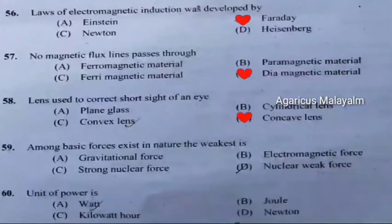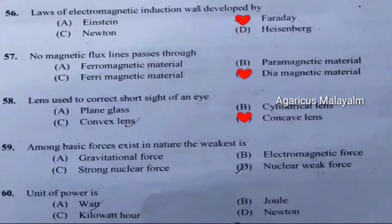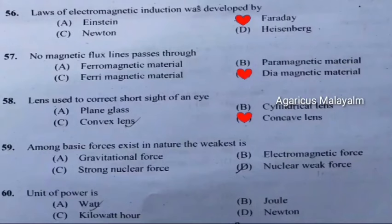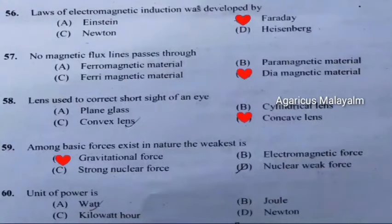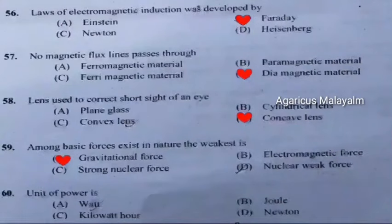Question 59: Among basic forces existing in nature, the weakest is. Correct answer is Option A: Gravitational forces. Question 60: Unit of power. Correct answer is Option A: Watt.